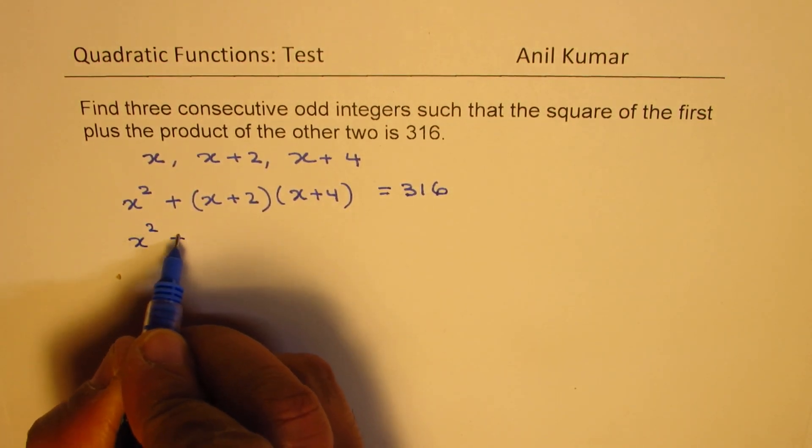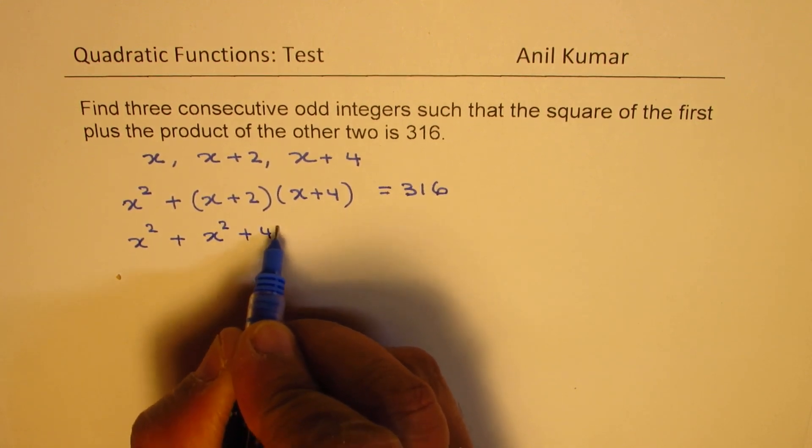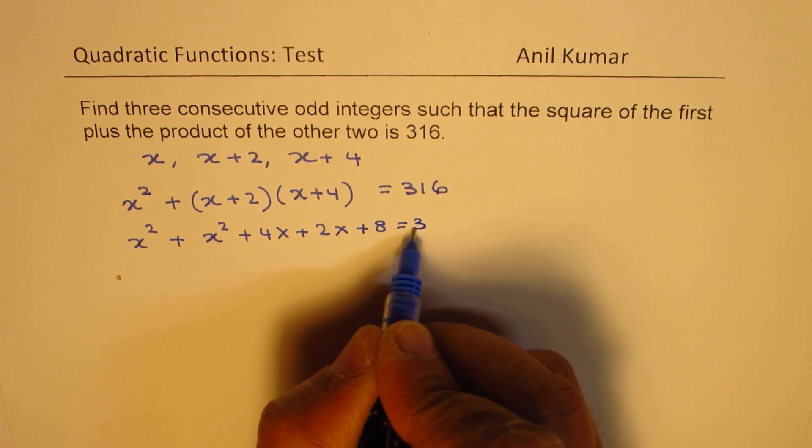Now let's try to simplify. Open this bracket. So we get x squared plus 4x plus 2x plus 8 equals to 316.